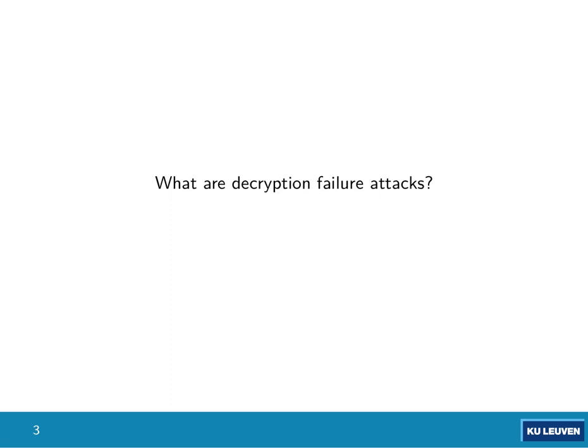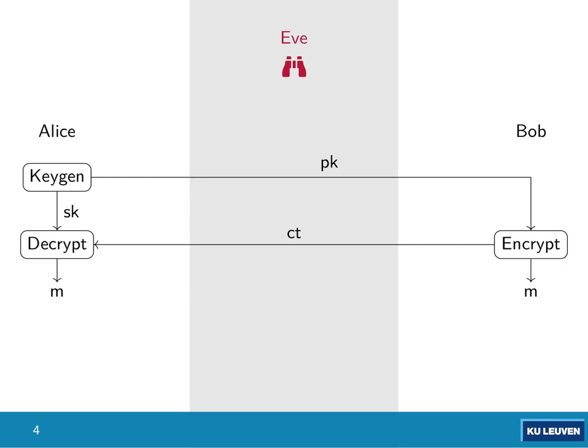What are decryption failure attacks? They are attacks on public key encryption schemes. Imagine Alice and Bob who want to communicate but have no pre-shared secret key. Alice generates a public key and secret key, sends the public key to Bob. Bob uses the public key with an encryption procedure to generate a ciphertext for a certain message or shared secret key. Bob sends this ciphertext back to Alice, who uses her secret key to decrypt to the message or shared secret key.